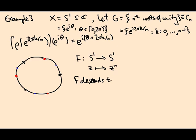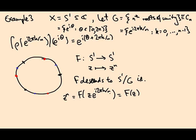It descends to S¹ over G. Remember what that means is, if I do f evaluated at z times one of these roots of unity, I should get the same as just f of z. And that's true because if I raise this to a power n, I just get z to the n times e to the i 2π k. It cancels with this 1 over n in the exponent. And that's exactly right because e to the i 2π is 1. So that cancels with z to the n.